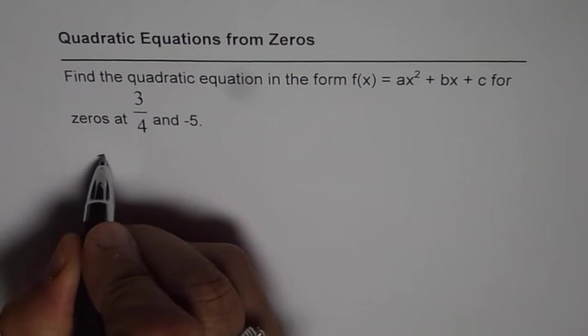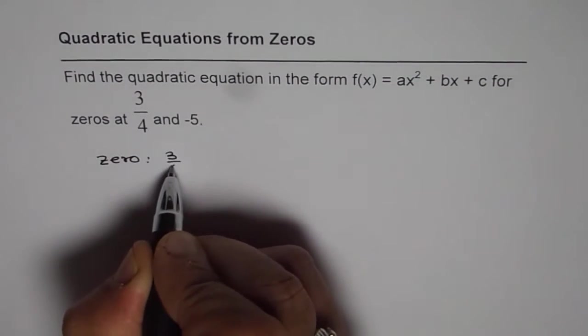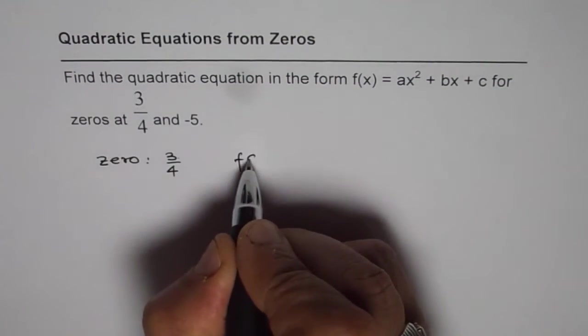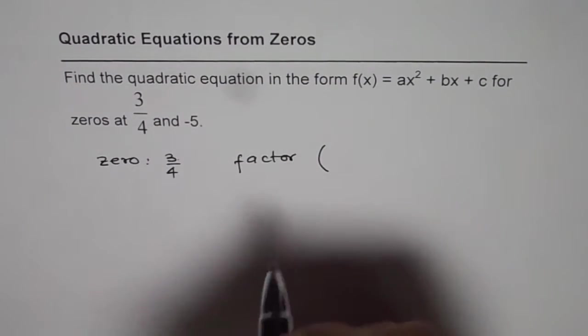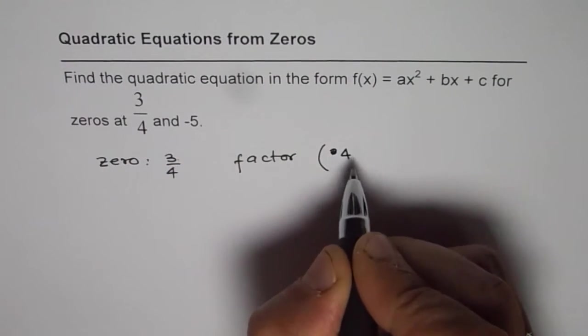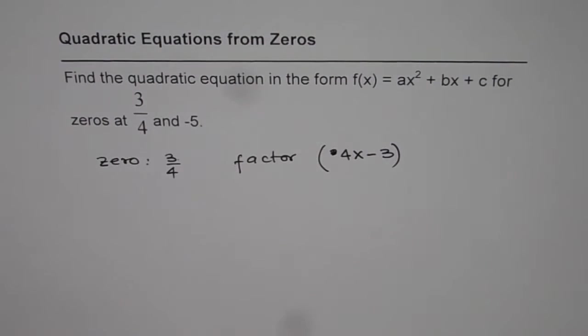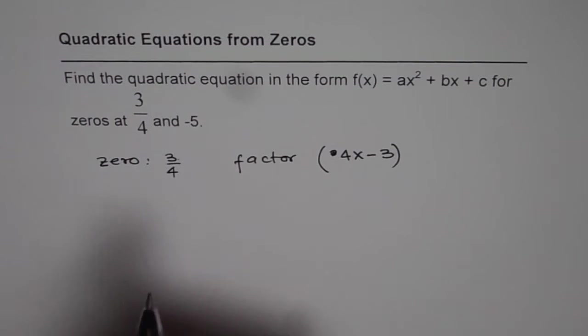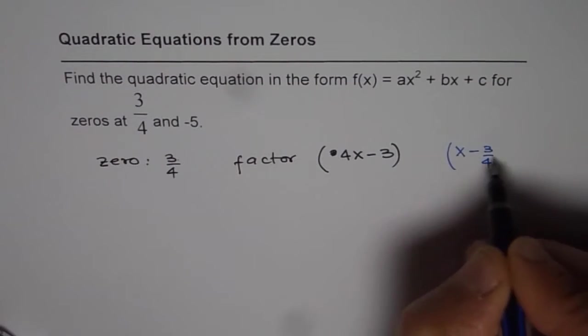Now if we have a zero which is at 3/4, it means what? It means that we have a factor which should be what? I could write this as 4x - 3. That is the factor for 3/4 as a zero, right?